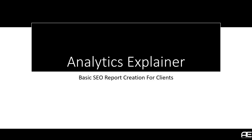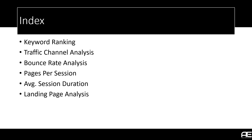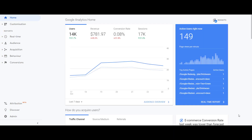Welcome to Analytics Explainer. Today we will be having a look at how to create a basic SEO report for our clients. Requirements for this report are Google Analytics or any other tracking mechanism installed on your client's website. We will be using Google Analytics and Microsoft Excel. We will be covering how to analyze keyword ranking, traffic coming to the website, bounce rate, pages per session, average session duration, and landing page analysis to understand how the content is performing on the website.